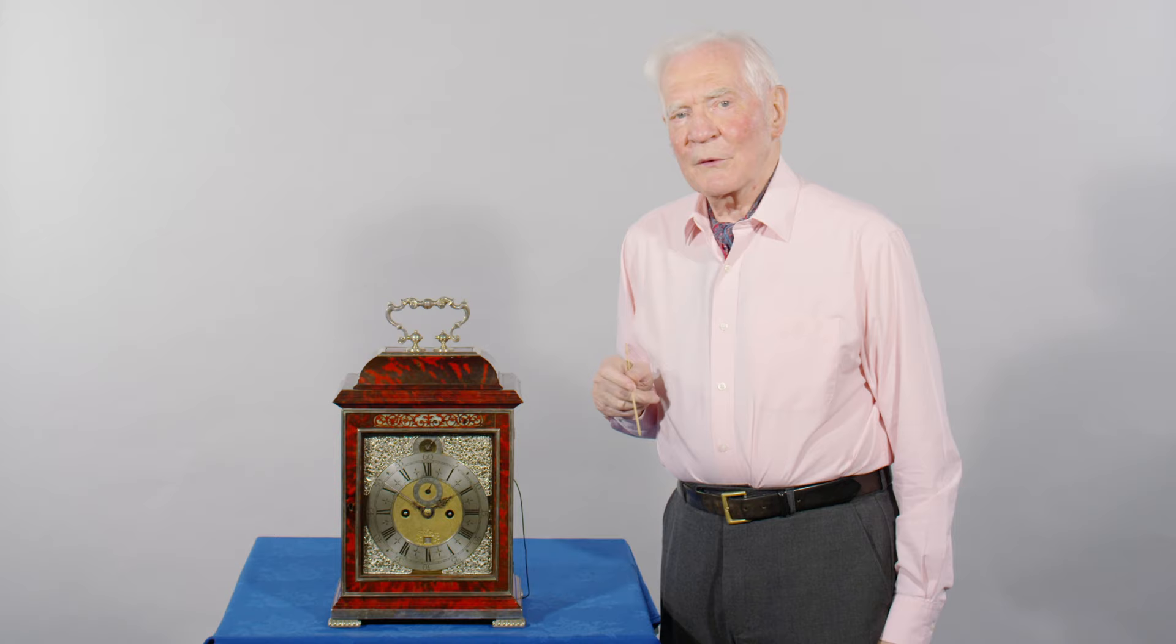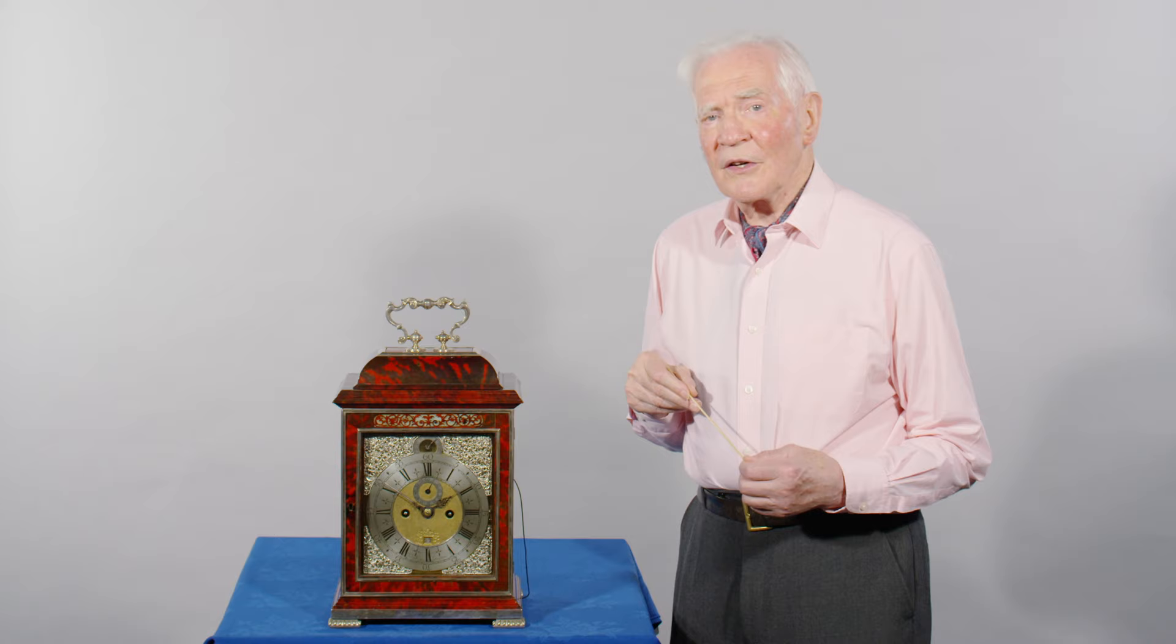This opulent table clock was made in about 1695 by Henry Massey. Henry was part of the family of Huguenots who came over with their father Nicholas and his two brothers to escape religious persecution.